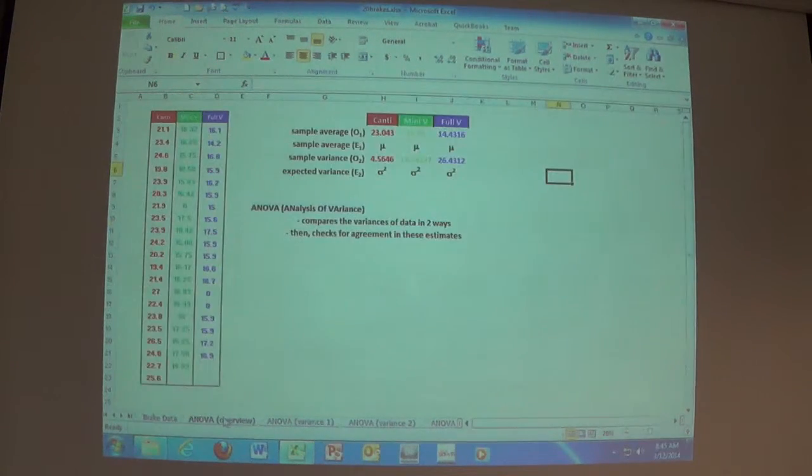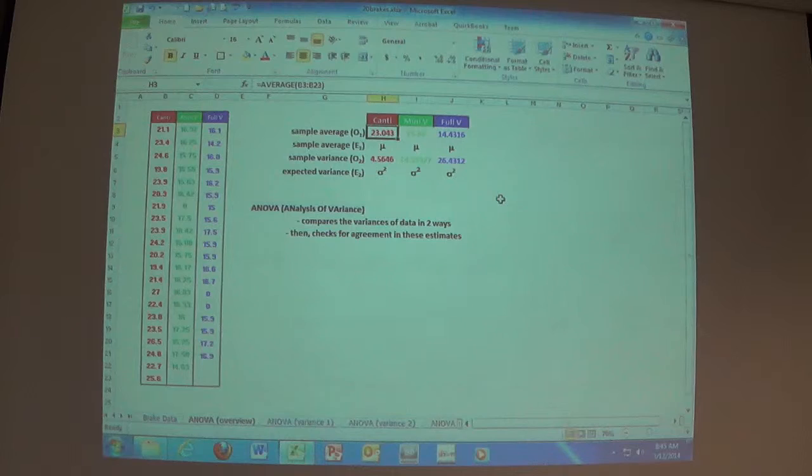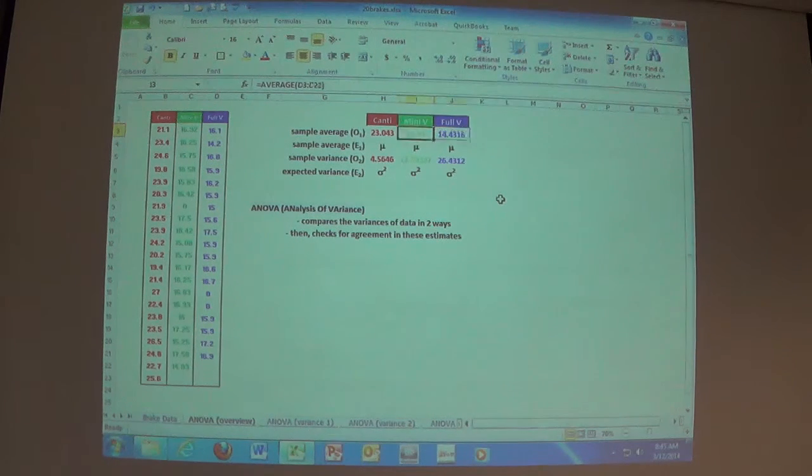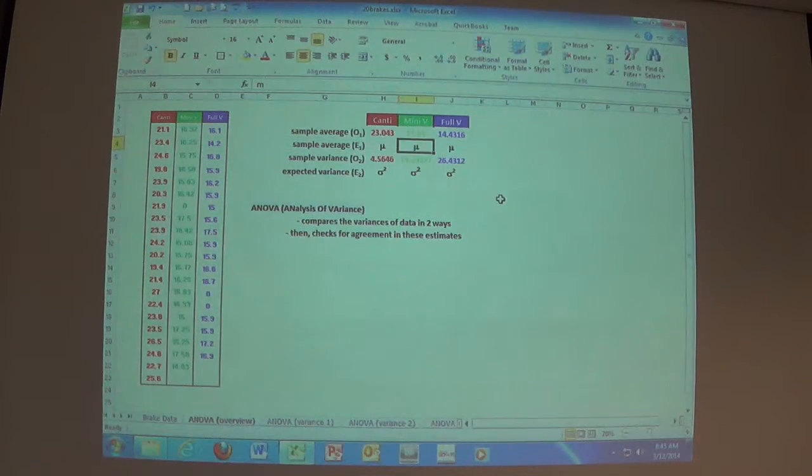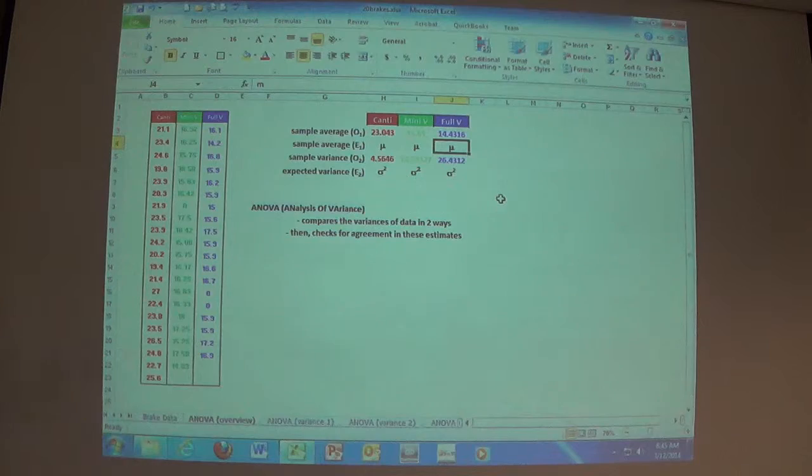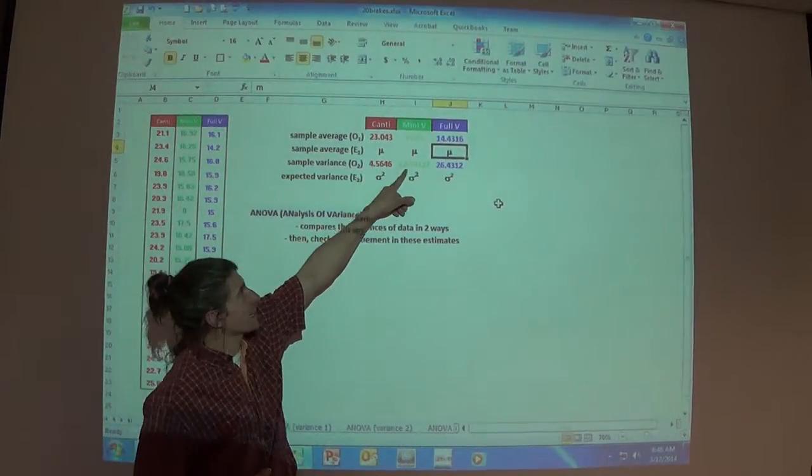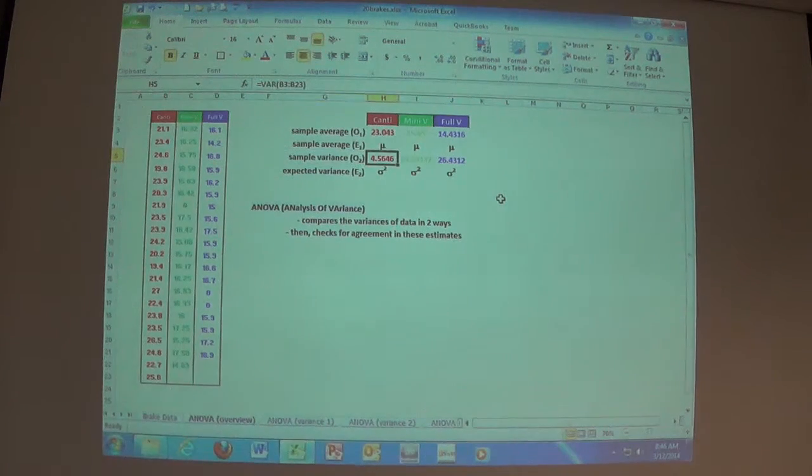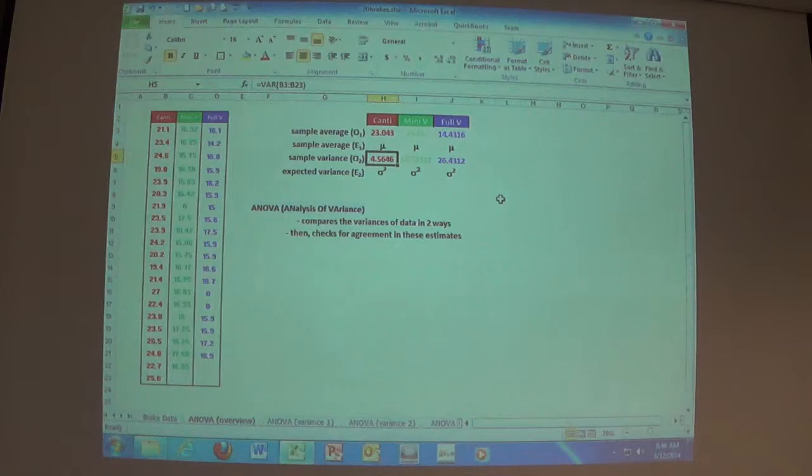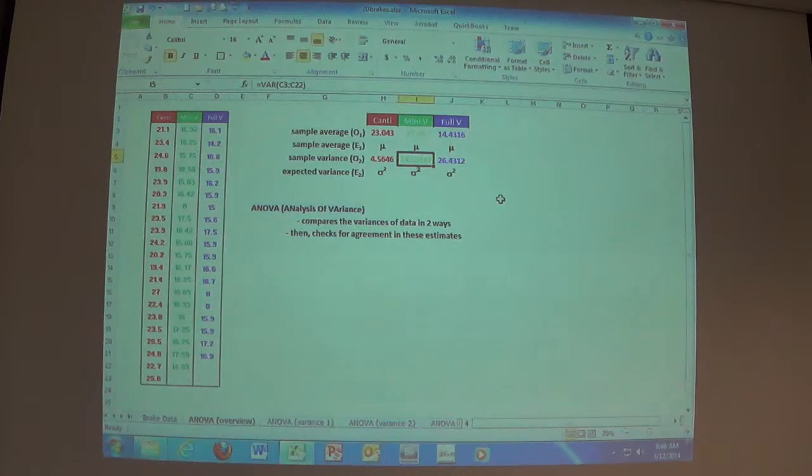One way you can analyze the variance is taking all the sample averages. Here they are, and you can see there definitely is a difference between the cantilever stopping distances and the mini v and the full v's. Now, I'm going to put the expected sample averages to all be this number, mu. I'm calling it mu. Remember the null hypothesis says they're all the same? So, they all have the same number, whatever mu is. Then, I calculate the sample variances of each one of them. Those are in square feet, square feet.